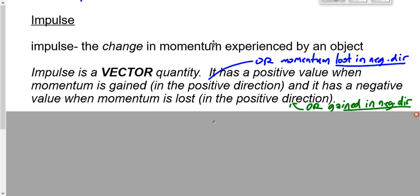So if I drop a ball from about a meter and a half above the ground and we're looking at the impulse the ball experiences as it falls — would you consider that a positive or negative impulse? The momentum of the ball right now is zero. Half a second from now it's something — so there's a change in momentum. It would be a negative impulse because it's gaining momentum in the negative direction, speeding up downward.